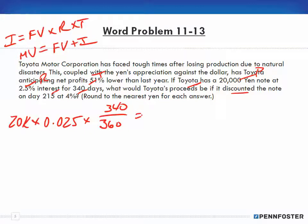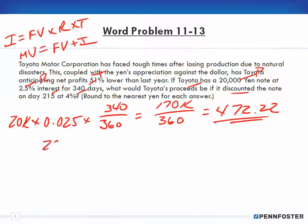We do the math on this: 20,000 times 0.025 times 340 gives us 170,000 in the numerator, and we divide that by 360 in the denominator, which gives us 472.22 as the interest.